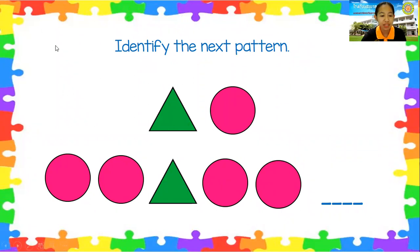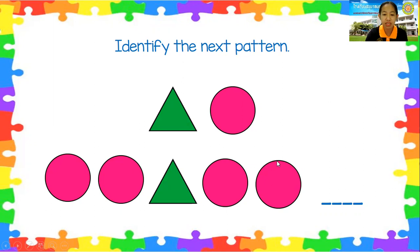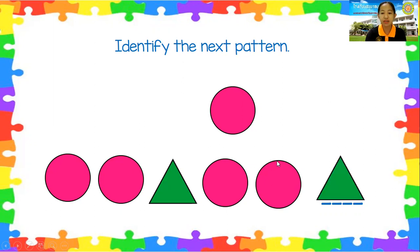The pattern is circle, circle, triangle, circle, circle. What do you think is the next pattern? It's triangle. Very good, that is correct.